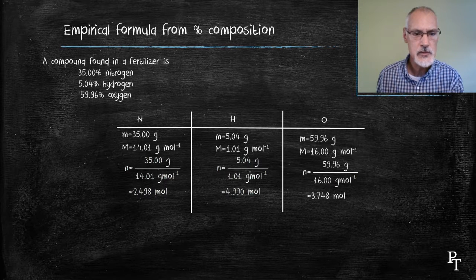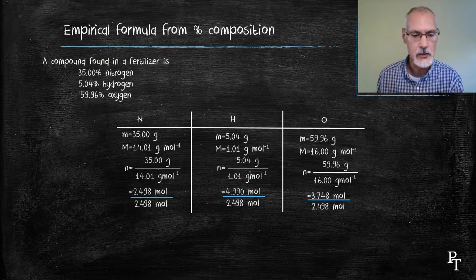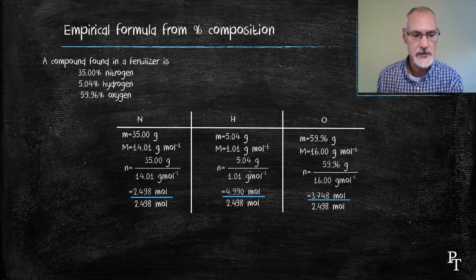Now I want to establish what the ratio is between these three elements. To do that, I take the lowest one and divide it into them all. So the 2.498 is the lowest and I divide it into all of the others and I arrive at the following ratio. From close inspection, this is very close to one to two to one and a half.